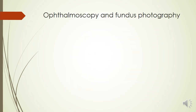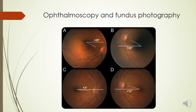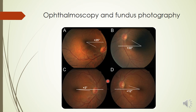Ophthalmoscopy and fundus photography can also be used. By joining the fovea and the optic disc, a reference line is formed; from the perpendicular, the degree of intorsion or extorsion can be measured. For example, one image may show 25 degrees of intorsion and another 30 degrees of extorsion. Software-based models make these measurements easier and more precise.